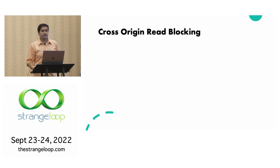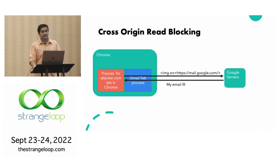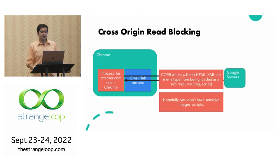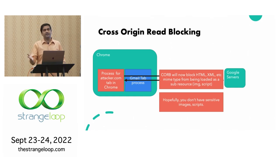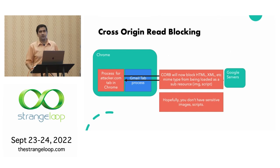Chrome and new browsers came up with a new spec called Cross-Origin Read Blocking, or CORB. Cross-origin read blocking says: if you try to load IMG SRC mail.google.com, it will block all HTML and XML. You're not allowed to load HTML and XML MIME types into your page via an image tag, script tag, XMLHttpRequest, or anything like that. The idea is that hopefully your sensitive data is in HTML or XML. Most people keep static stuff in images and scripts, and HTML and XML hold the sensitive data. So CORB enforces MIME type rules — you cannot load HTML and XML as an image tag or script tag.